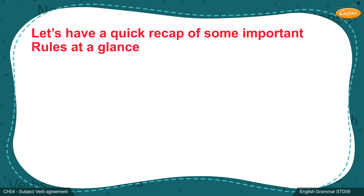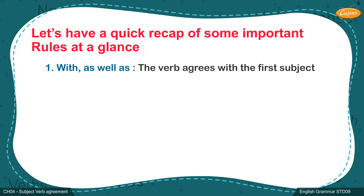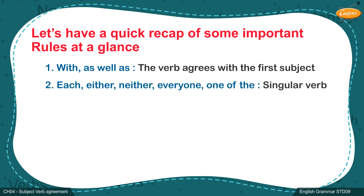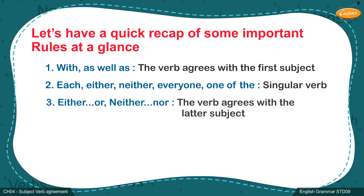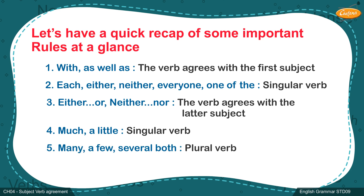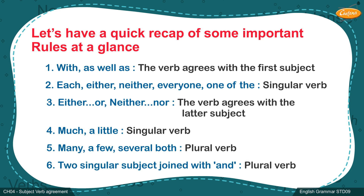Let's have a quick recap of some important rules at a glance. 1: With 'as well as', the verb agrees with the first subject. 2: 'Each', 'either', 'neither', 'everyone', 'one of the' — take a singular verb. 3: 'Either...or', 'neither...nor' — the verb agrees with the latter subject. 4: 'Much', 'a little' — singular verb. 5: 'Many', 'a few', 'several', 'both' — plural verb. Two singular subjects joined with 'and' — plural verb.